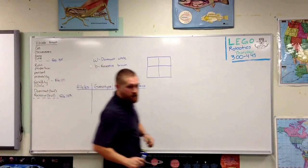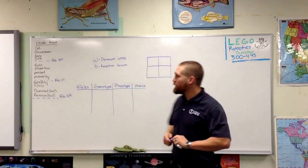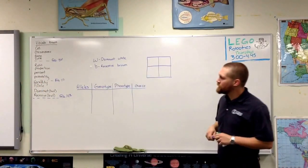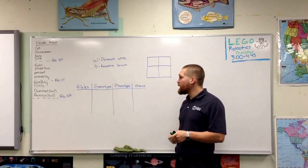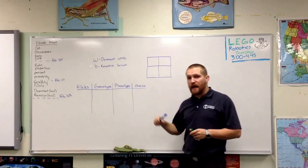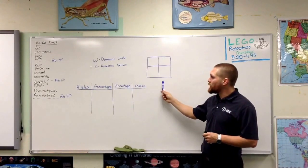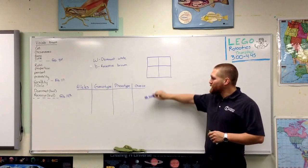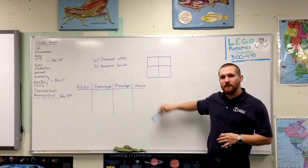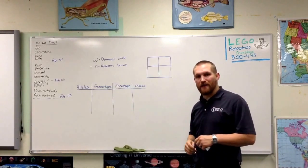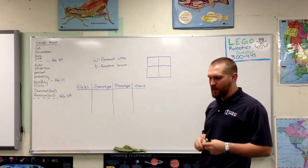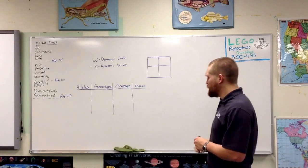I'm going to walk you through the difference between genotype, phenotype, and how to use a Punnett square to tell the chance of an animal getting certain traits depending on their alleles or types of genes.